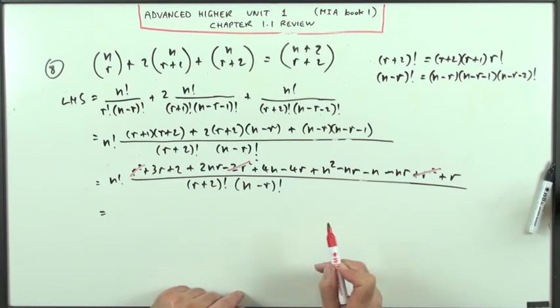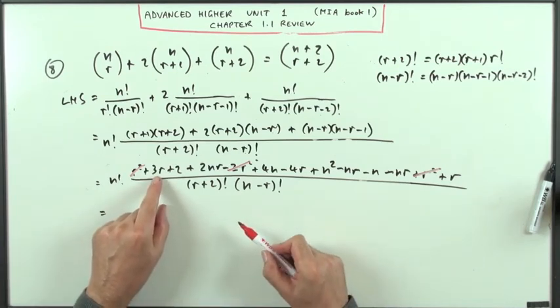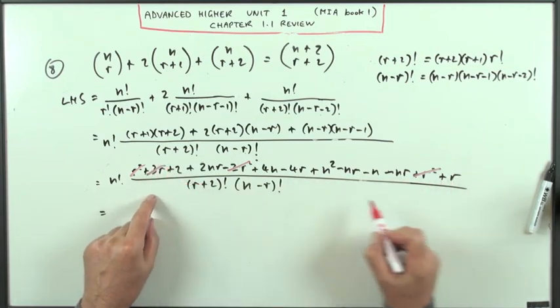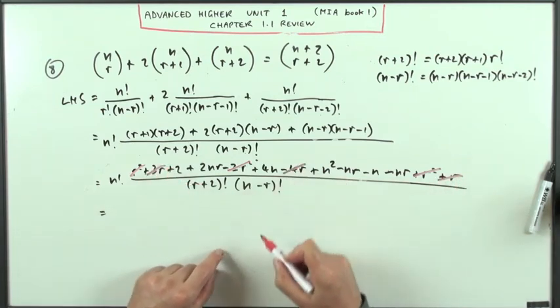What about the single r's? How are they going to go? I've got three r, minus four r, plus r, they're going to go. Three r plus r minus four r, that's gone.